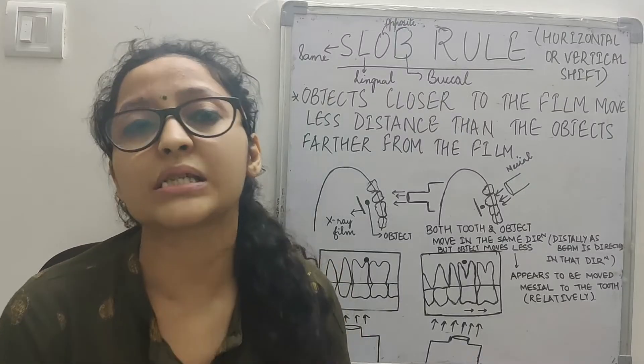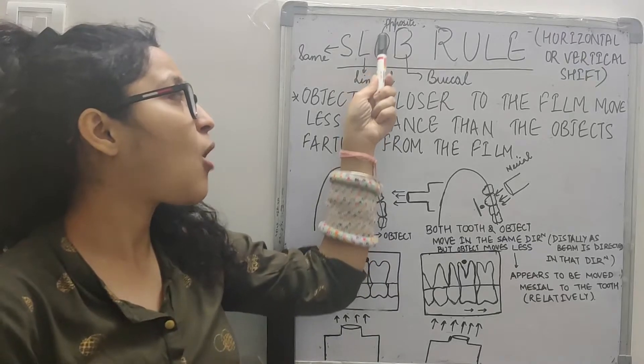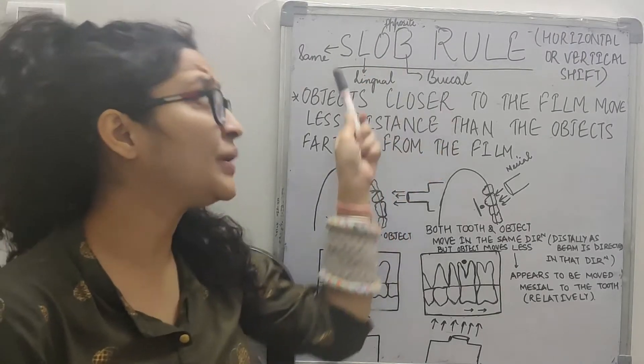Suppose we take an anterior region radiograph and we see there's an extra tooth present. We don't know whether the tooth is present on the outside or palatally. Sometimes we take a normal x-ray and see a tooth or foreign body, but we don't know if it is on the buccal surface or palatally located. That's when we use the SLOB technique. SLOB stands for Same side Lingual, Opposite Buccal.